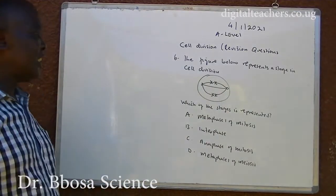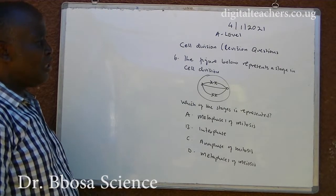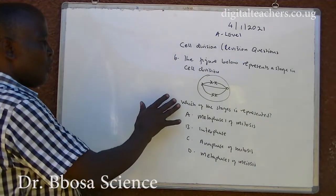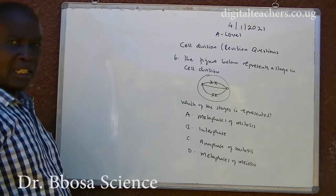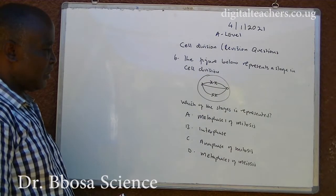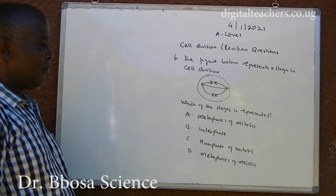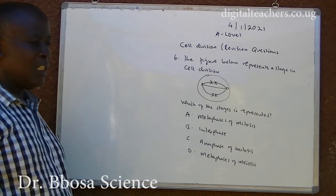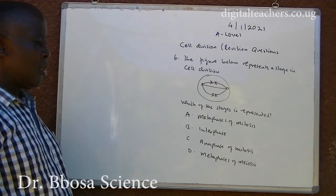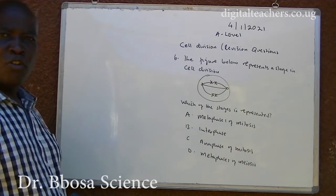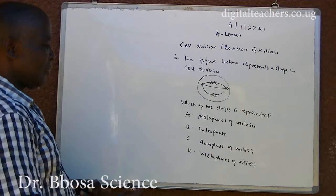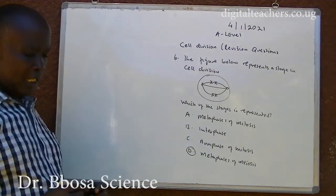Number 6. The figure below represents a stage in cell division. Which stage is represented? A. Metaphase 1 of mitosis. B. Interphase. C. Anaphase of mitosis. D. Metaphase 1 of meiosis. You can pause and answer. The answer is D.